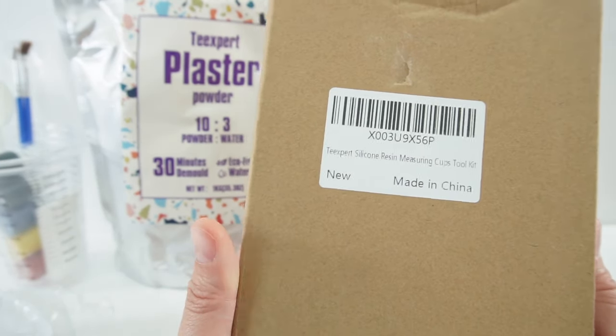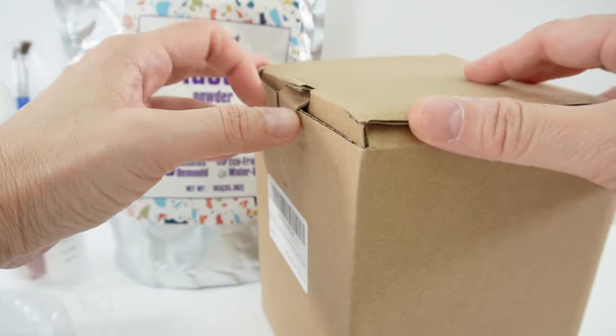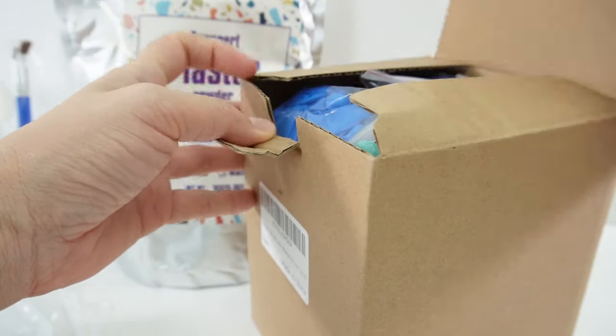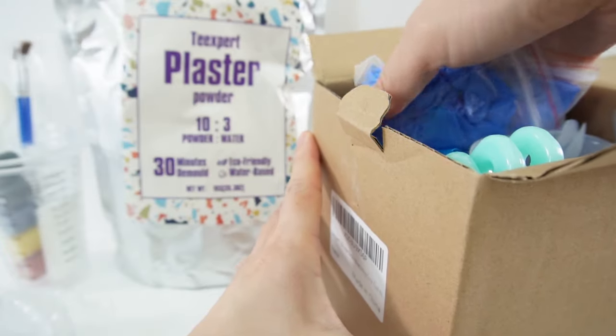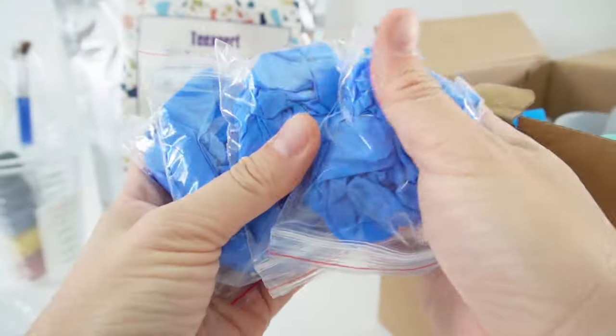In addition, I was also sent a silicone resin measuring cups and tool kit. So you can get both of these on Amazon. Go down to the description for the links. So in here we get some gloves.